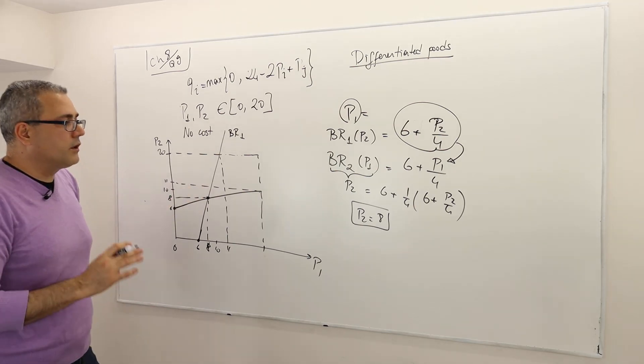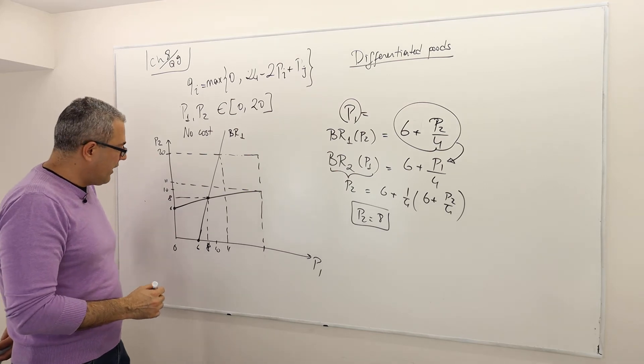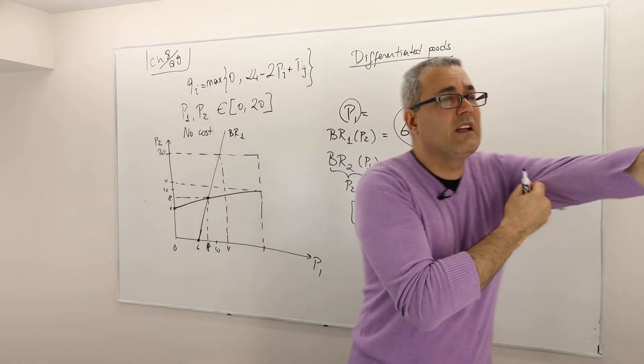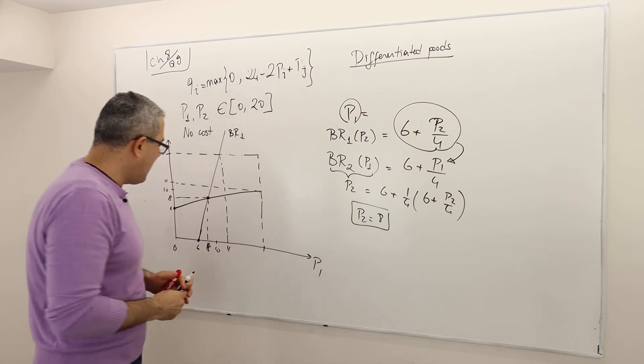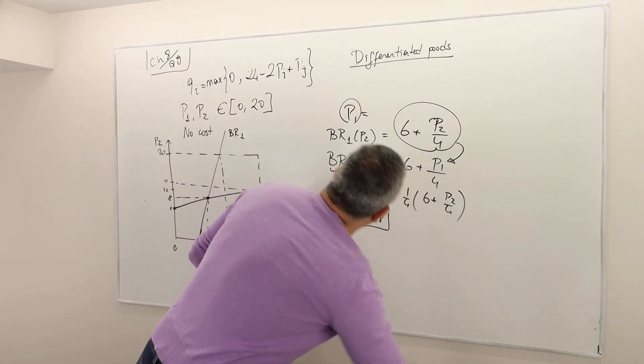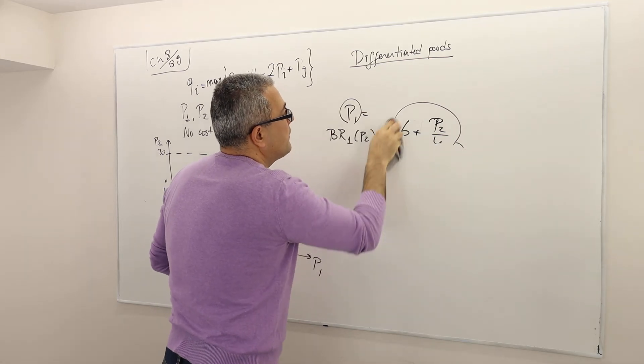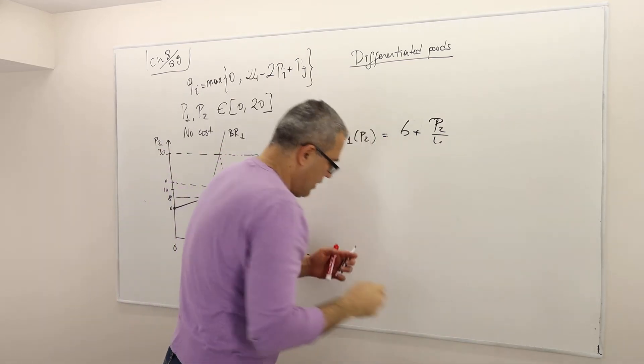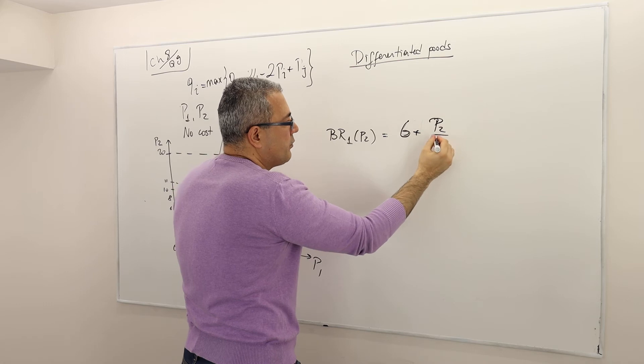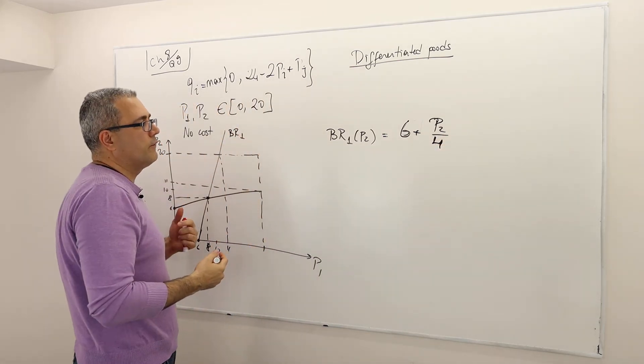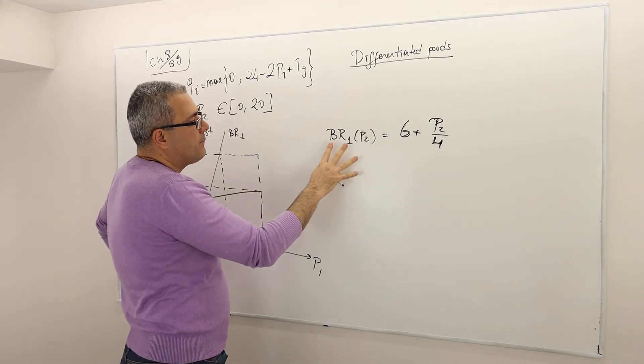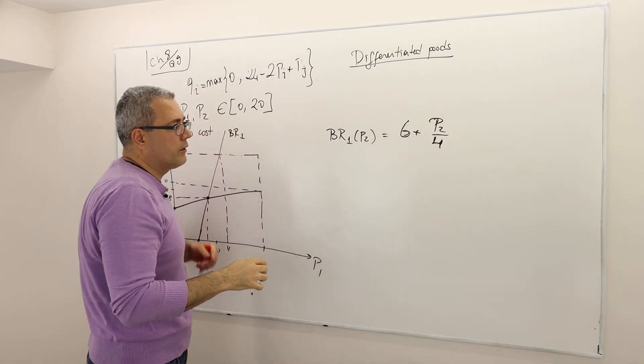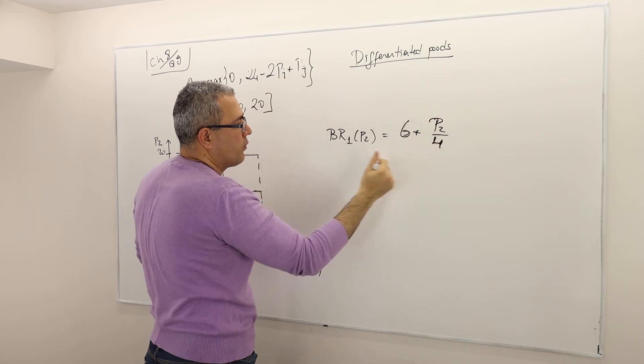The question is, show that the strategies less than 6 and strategies more than 11 are strictly dominated. How so? Let's focus on player 1. So this is player 1's best response. Remember, the game is symmetric, so everything will be transferred to player 2 as well, because the symmetric argument will work for the second player. So, the best response for the first firm is 6 plus p2 divided by 4. So what was the lowest possible price for p2? So remember, p2 is in between 0, 20.